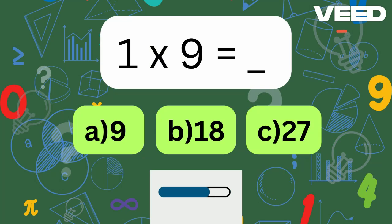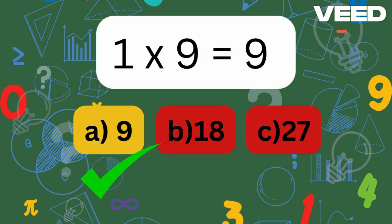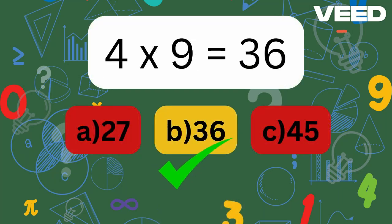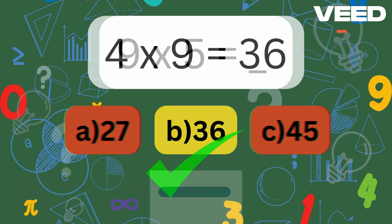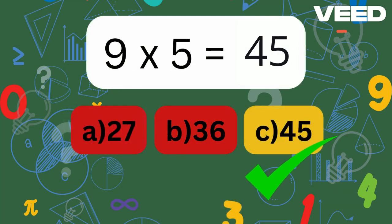1 times 9 is... 1 times 9 is equal to 9. 4 times 9 is... 4 times 9 is equal to 36. 9 times 5 is... 9 times 5 is equal to 45.